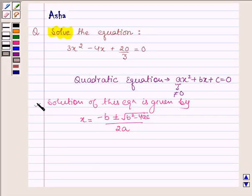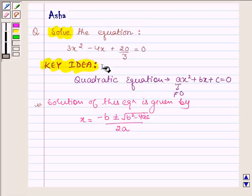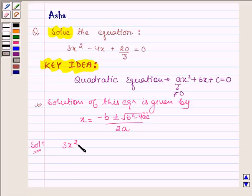So with the help of this idea we are going to solve the given equation. So this will be our key idea. Let us now begin with the solution, and the given equation is 3x² - 4x + 20/3 = 0.